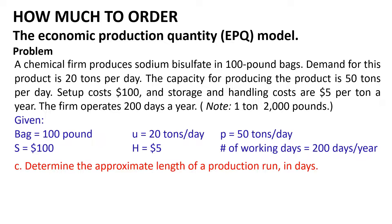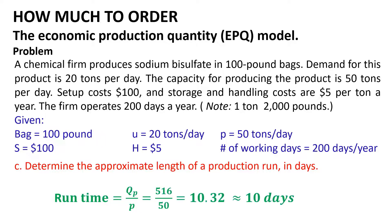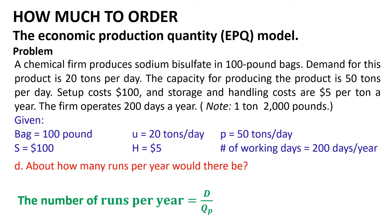The third question is the approximate length of a production run in days: Q_p / p = 516 / 50 = 10.32 ≈ 10 days. The last question is the number of runs per year, found by dividing demand D by the economic production quantity Q_p: 4,000 / 516 = 7.75 ≈ 8 runs.